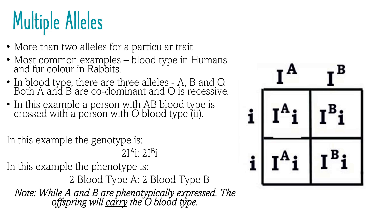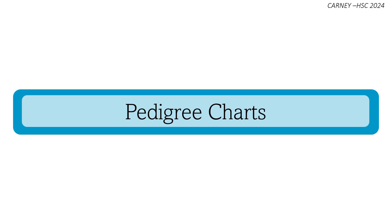In this example, we have a person with blood type A crossed with a person with blood type O. The resulting genotype is 50% of the offspring with blood type A and 50% with blood type O. Phenotypically, they will express the dominant blood type but carry the recessive O blood type.